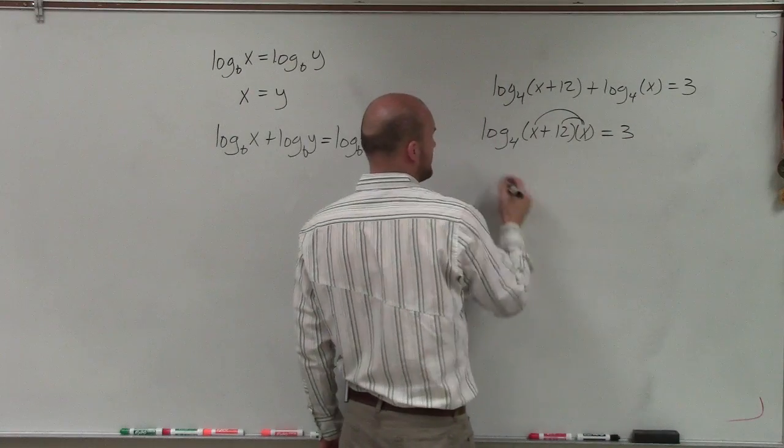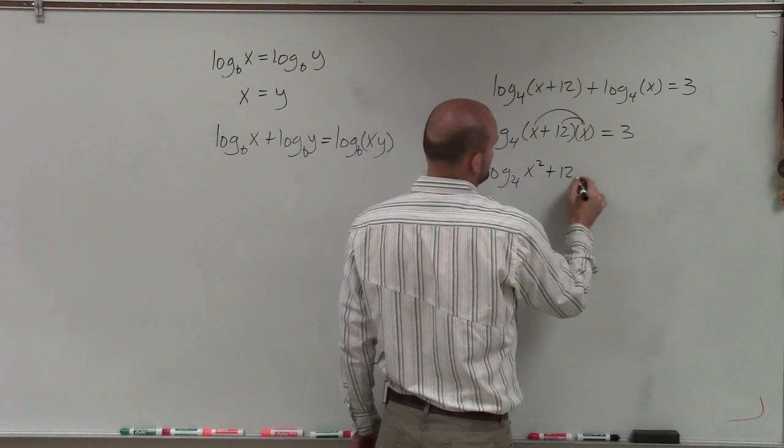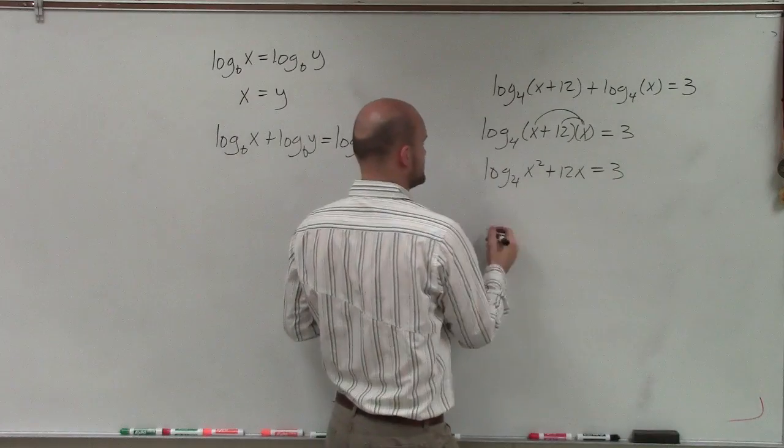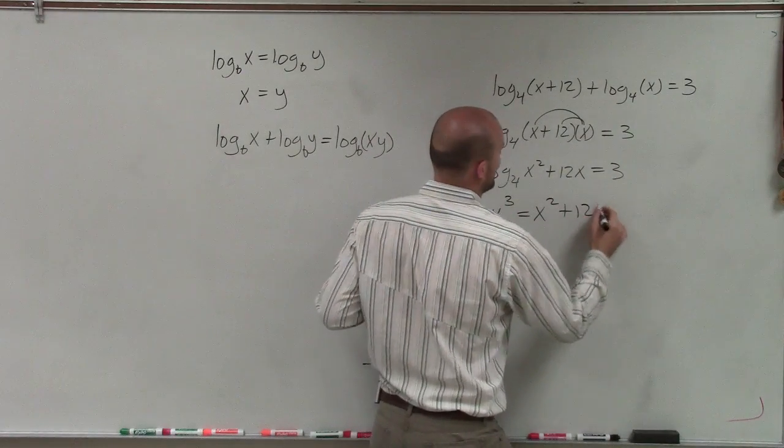Now, applying the distributive property, I have log base 4 of (x² + 12x) equals 3. What I can do is rewrite this in exponential form, so it would be 4³ equals x² + 12x.